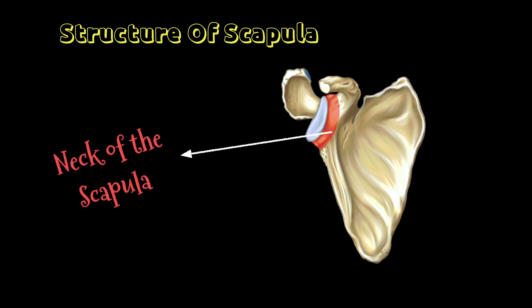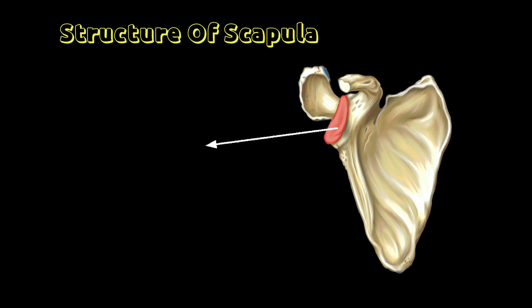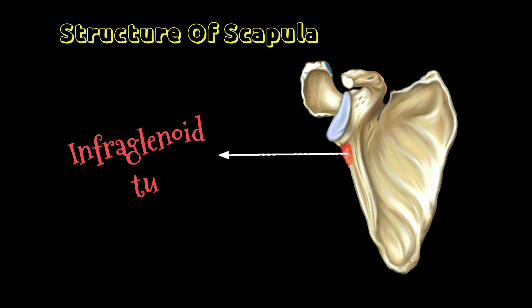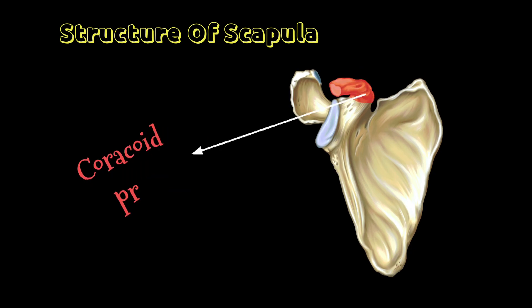Neck of the scapula and glenoid cavity. Infraglenoid tubercle and coracoid process.